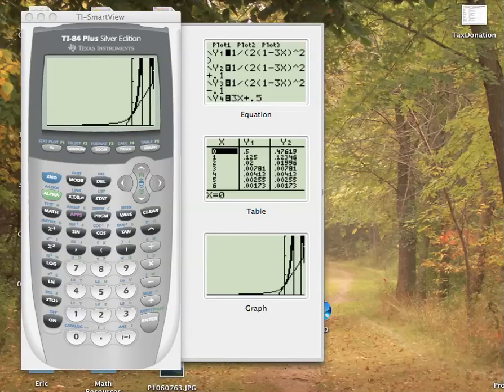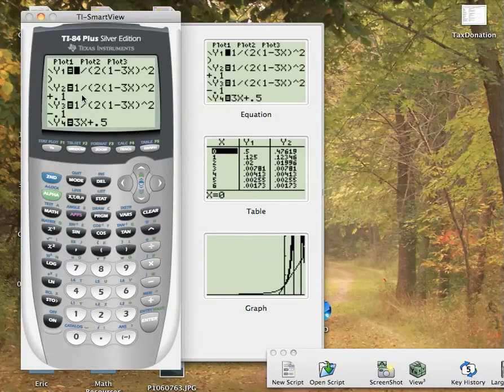Here's the calculator. I've typed in the equations. You have to pay attention to how you type them in very carefully. There's 1 over, and then in parentheses, 2 times (1 minus 3x) squared, and then here's the closing parentheses. And I did it plus 0.1 at the end and minus 0.1.